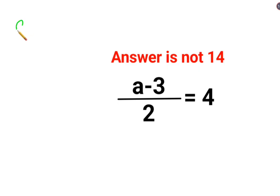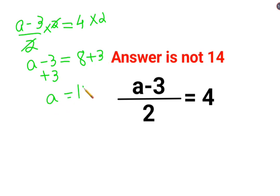When you have A minus 3 upon 2 equals 4, you need to multiply both sides by 2. So this gets cancelled and then you have A minus 3 equals 8. 4 multiplied by 2 is 8. Adding 3 on both sides, we get the value of A as 8 plus 3, which is 11.